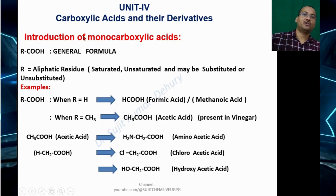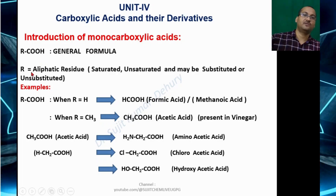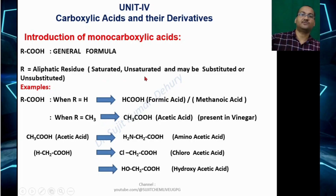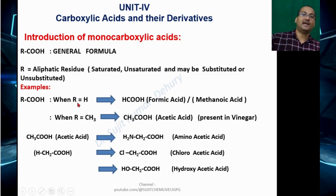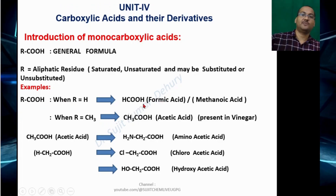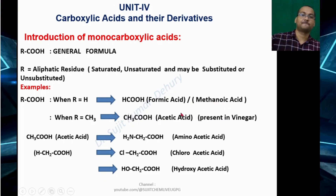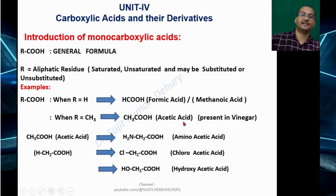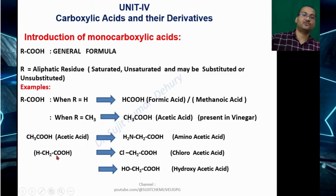The general formula of carboxylic acid is RCOOH, where R is an aliphatic residue that can be saturated, unsaturated, substituted, or unsubstituted. When R is H, it becomes formic acid (HCOOH), also known as methanoic acid. When R equals CH3, it becomes CH3COOH — acetic acid, present in vinegar.